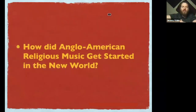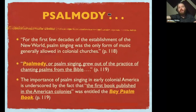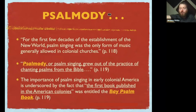We begin our discussion today with the question: how did Anglo-American religious music get started here in our country in the New World? Psalmody. Psalmody was the rule of the day for the early settlers. The singing of the psalms as written in the Bible was pretty much the common practice for colonial churches for the first few decades.